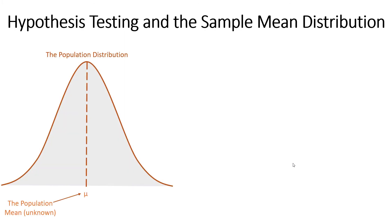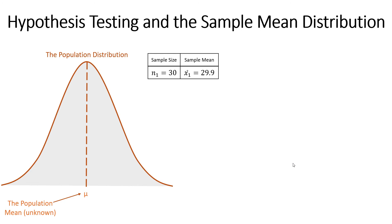So hypothesis testing and the sample mean distribution — the sample mean distribution is a core concept in inferential statistics and specifically in hypothesis testing. The way we create a sample mean distribution is that we have our original population on the left. We take a random sample of 30 units and calculate a sample mean value. We might do that 100 times, and every time we took a random sample we'd come up with a different sample mean value just based on random luck.